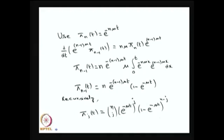Using this recursive approach, pi_j(t) equals C(n,j) times e^{-mu*t}^j times (1 - e^{-mu*t})^{n-j}. The survival probability of the system being in state j is e^{-mu*t}, and this is nothing but p^j times (1-p)^{n-j}, so pi_j follows the binomial distribution with survival probability p = e^{-mu*t}. Therefore, for the pure death process, the time-dependent probability of being in state j follows a binomial distribution.